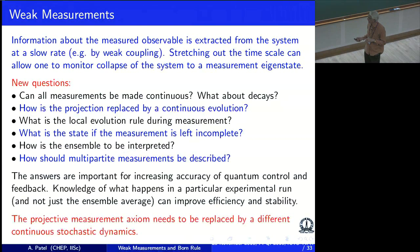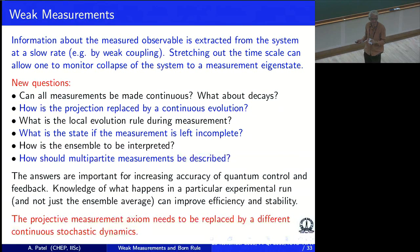The answers are important not only from the theoretical point of view, but for increasing the accuracy of quantum control and feedback. When you want to get good control and achieve good feedback, you need knowledge of what is happening in a particular experimental run, not just a global average. If you can understand what is going on in an individual run, you can improve the efficiency and stability. And since the result is probabilistic, I need to replace the projective measurement axiom by a continuous stochastic dynamics.